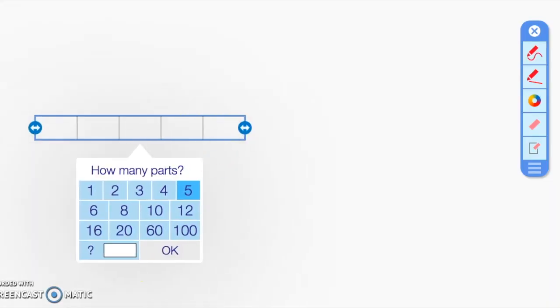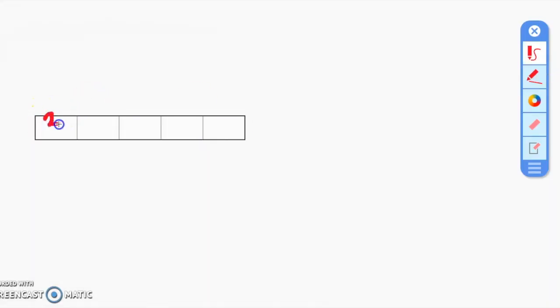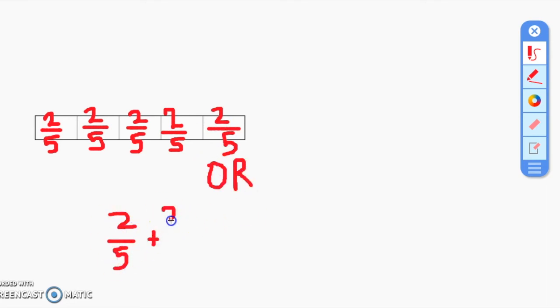Here are the groups of two-fifths. So if you add two-fifths together five times, that equals ten-fifths or two cups.